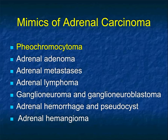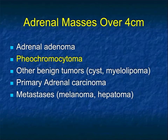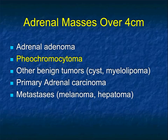When speaking about mimics of adrenocortical carcinoma, pheo is included. Although adrenocortical carcinomas are large and often aggressive, pheos can look very similar. Metastases and lymphoma can simulate adrenocortical carcinoma, but pheos can as well. Many of the smaller pheos are part of syndromes. Pheos can be larger, and when looking at masses over 4 cm - where you start worrying about malignancy - pheo falls into that category as well.